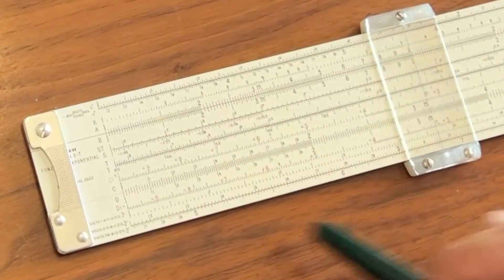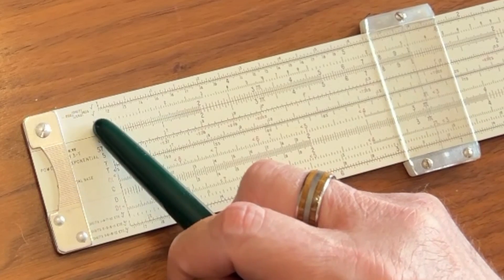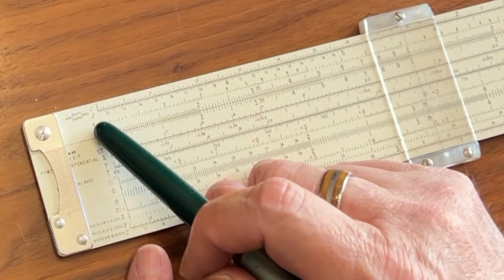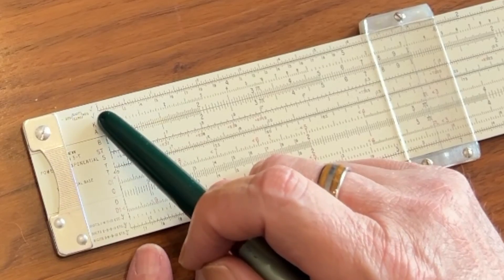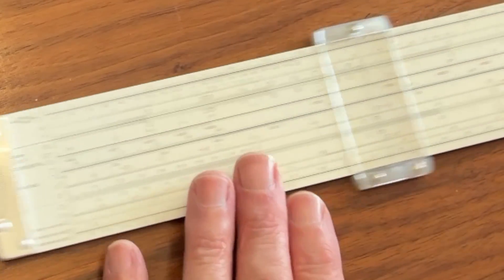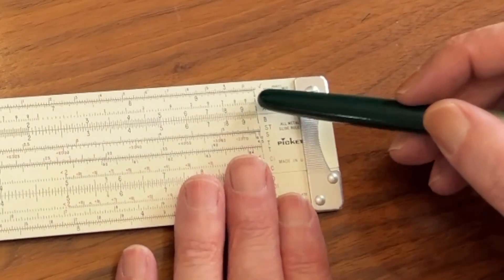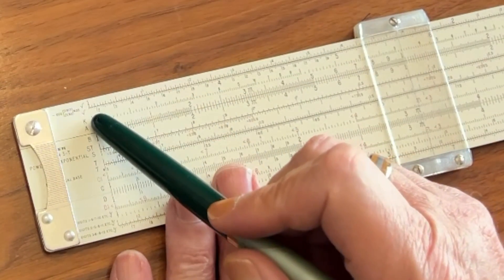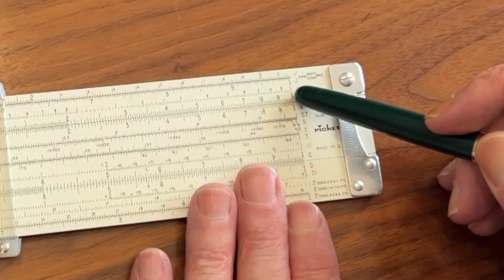Well, on the higher end Pickett slide rules, you have these two little symbols right here. These are square root symbols, and they're associated with two scales. So we have the top scale goes from 1 to 3.16, and the bottom scale goes from 3.16 to 10.